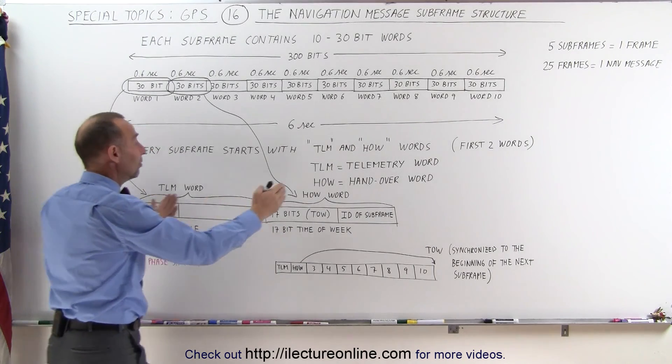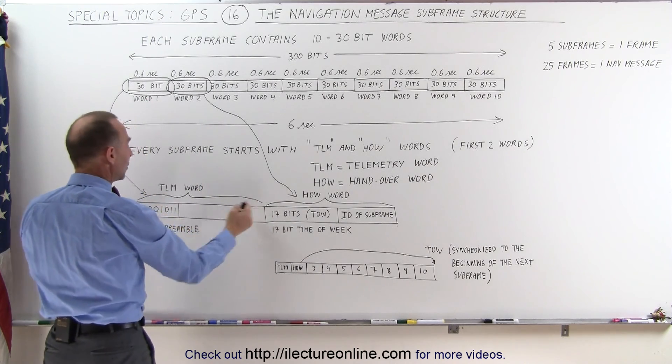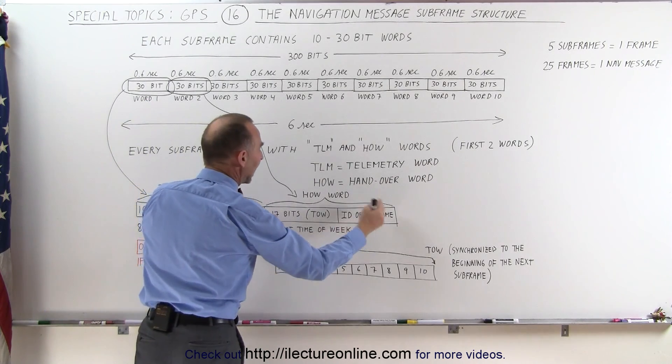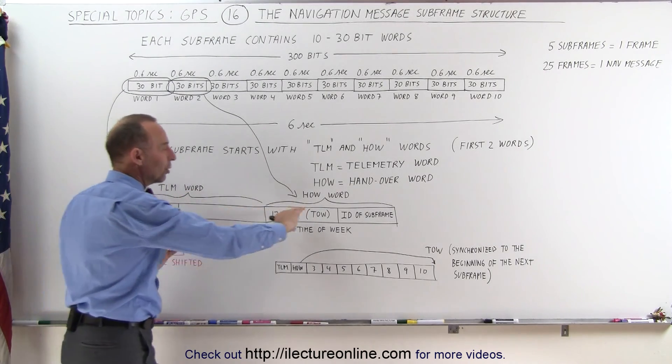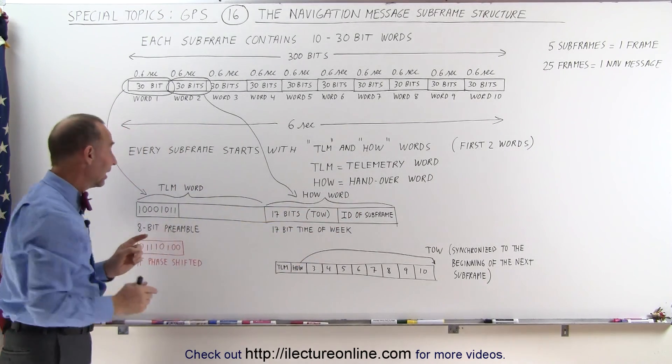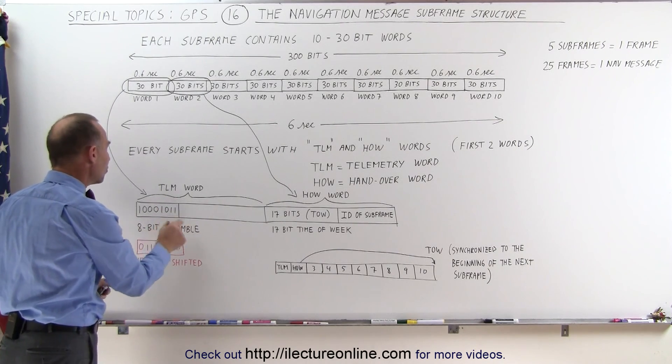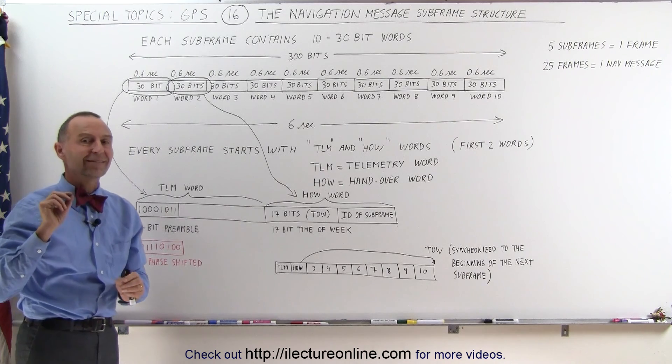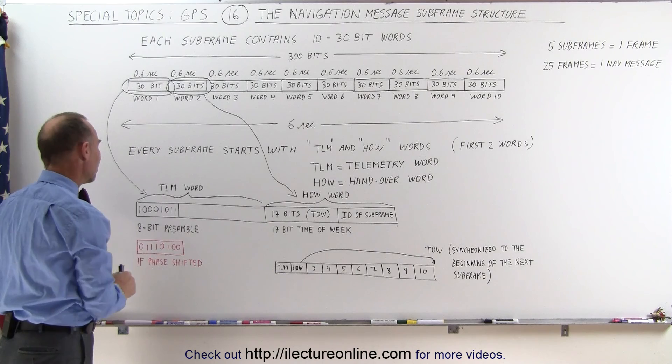Remember, there are 30 bits in each word, so here's an expansion of the TLM word, and here's an expansion of the HOW word. We're not yet telling you what's in the HOW word, but at least in the TLM word, the first 8 bits is what we call the 8-bit preamble. It is an exact code that is in that word. The first 8 bits are always exactly the same.